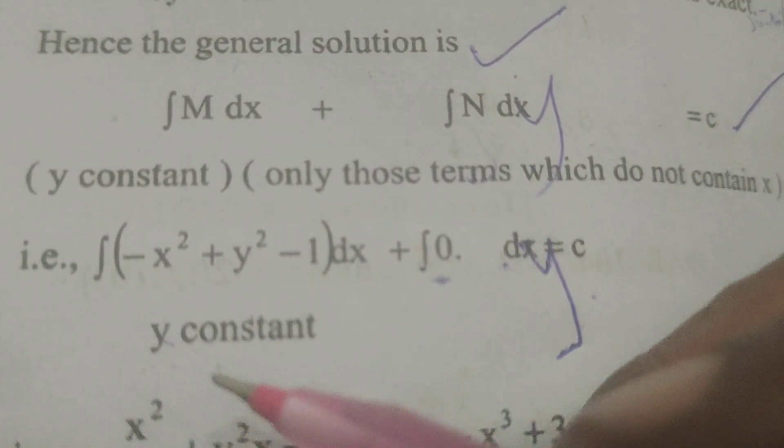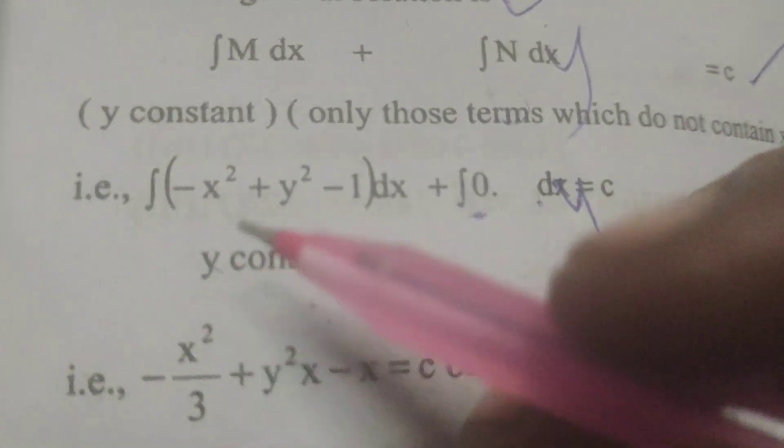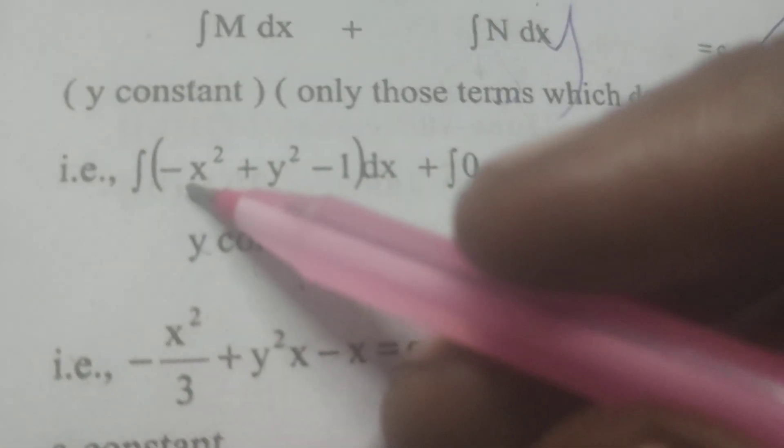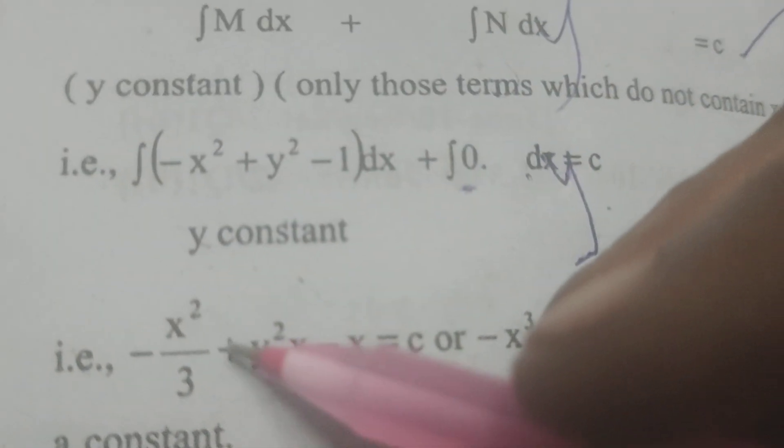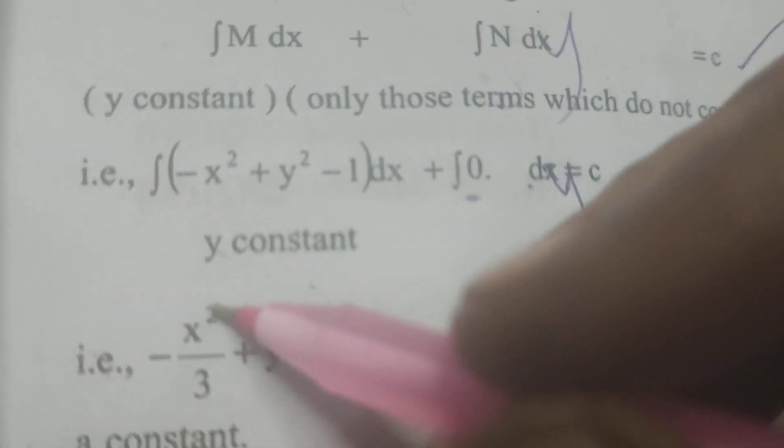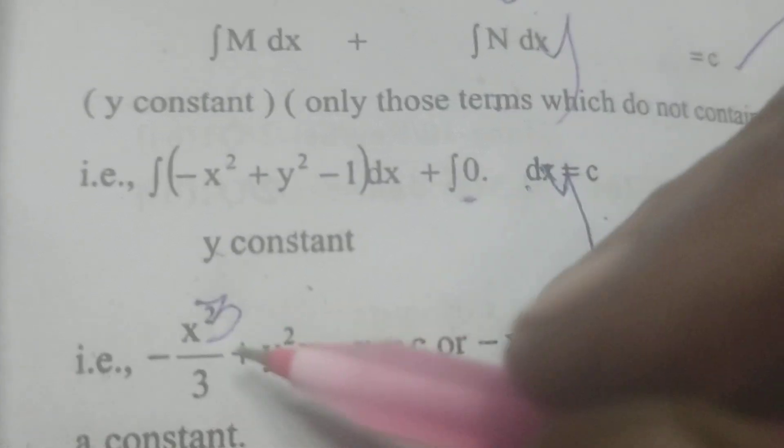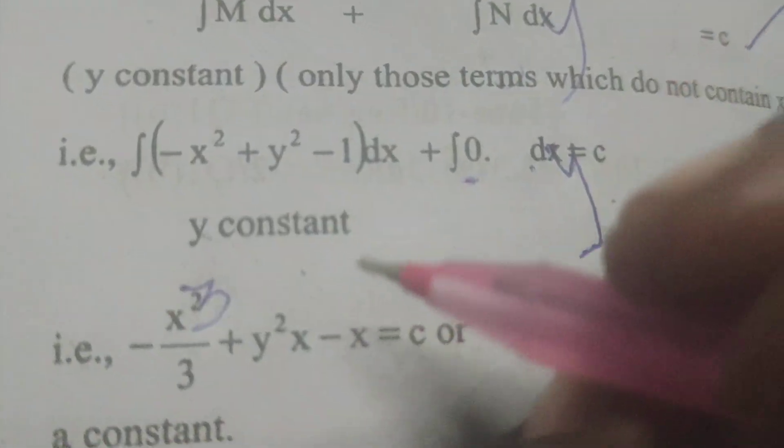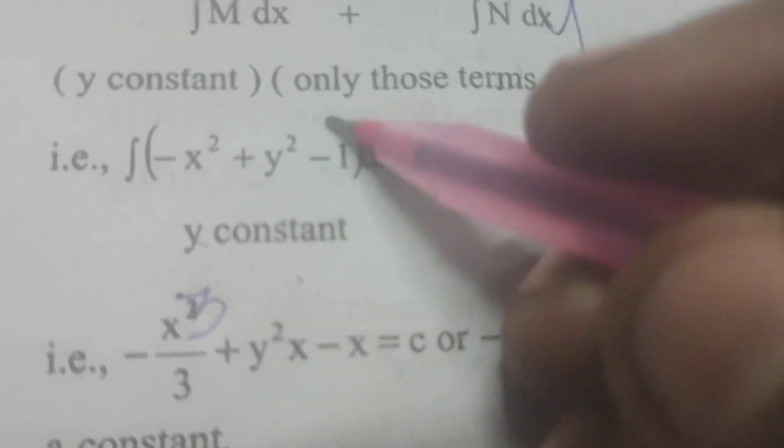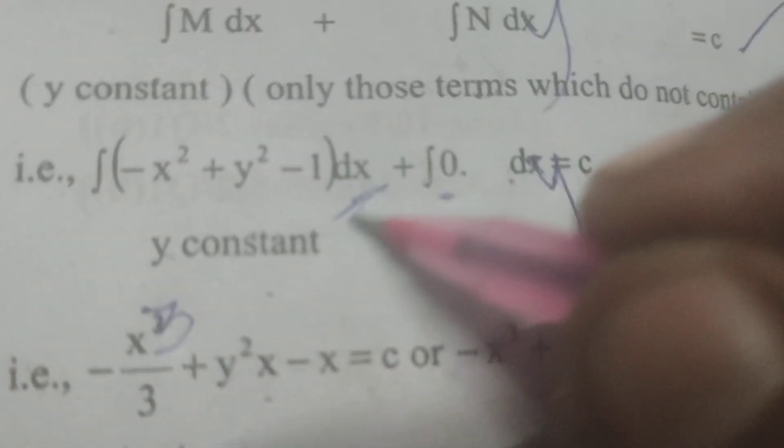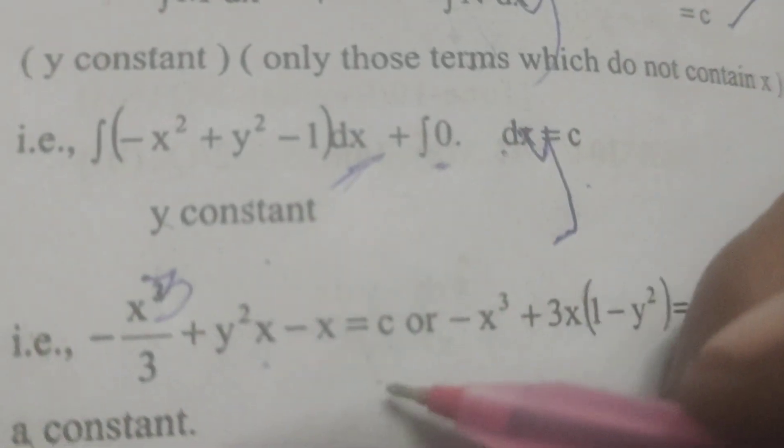Y is a constant here, so integrating this: integral of (-x² + y² - 1)dx. This is -x³/3 plus y² times x (because with respect to x). Integral of -1dx means minus x.